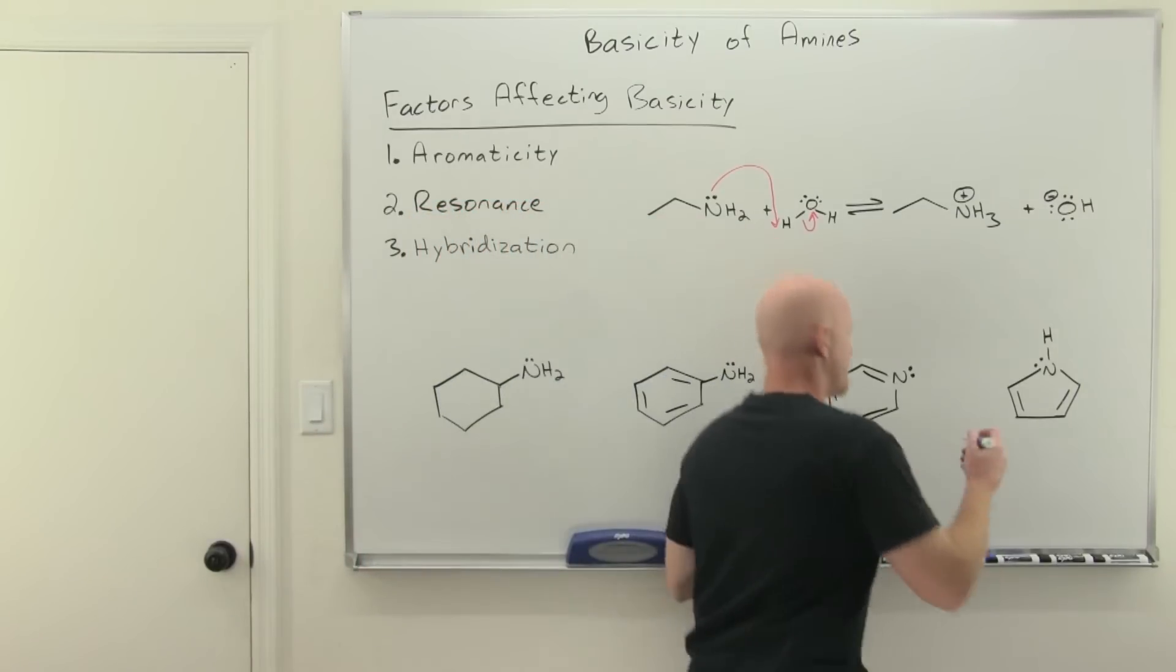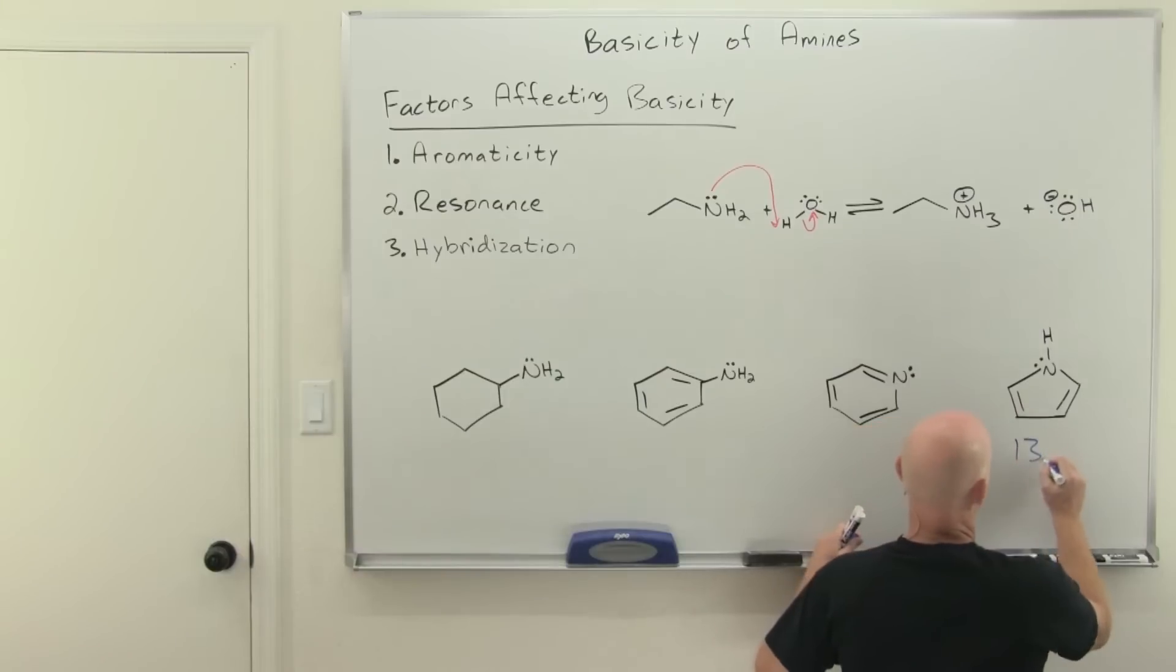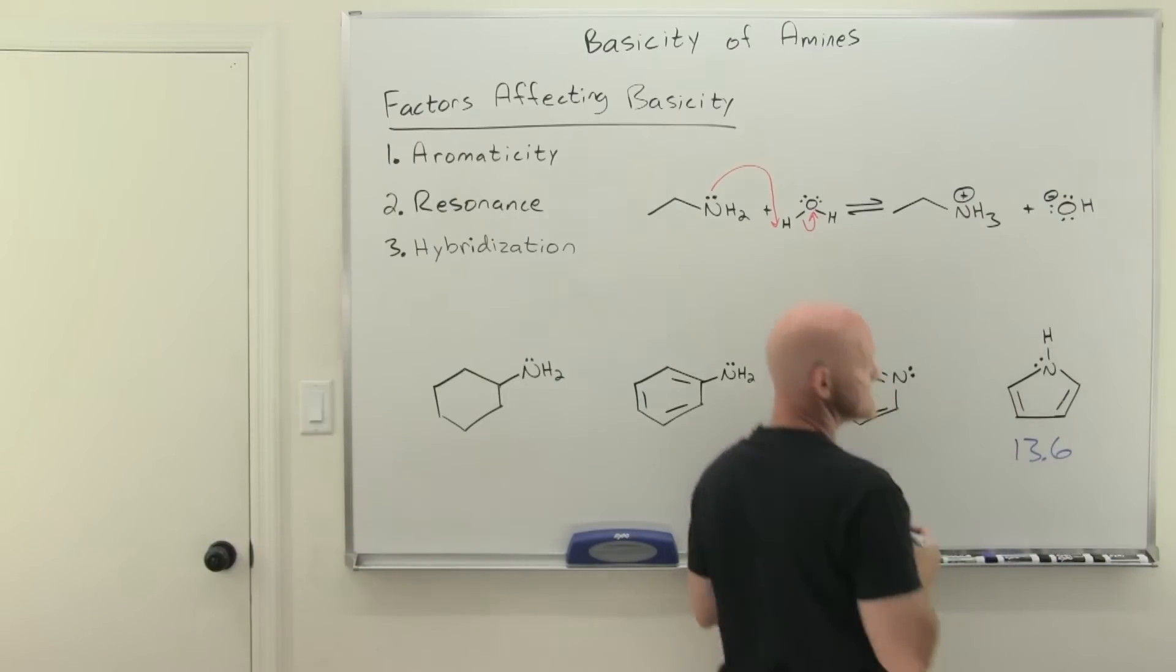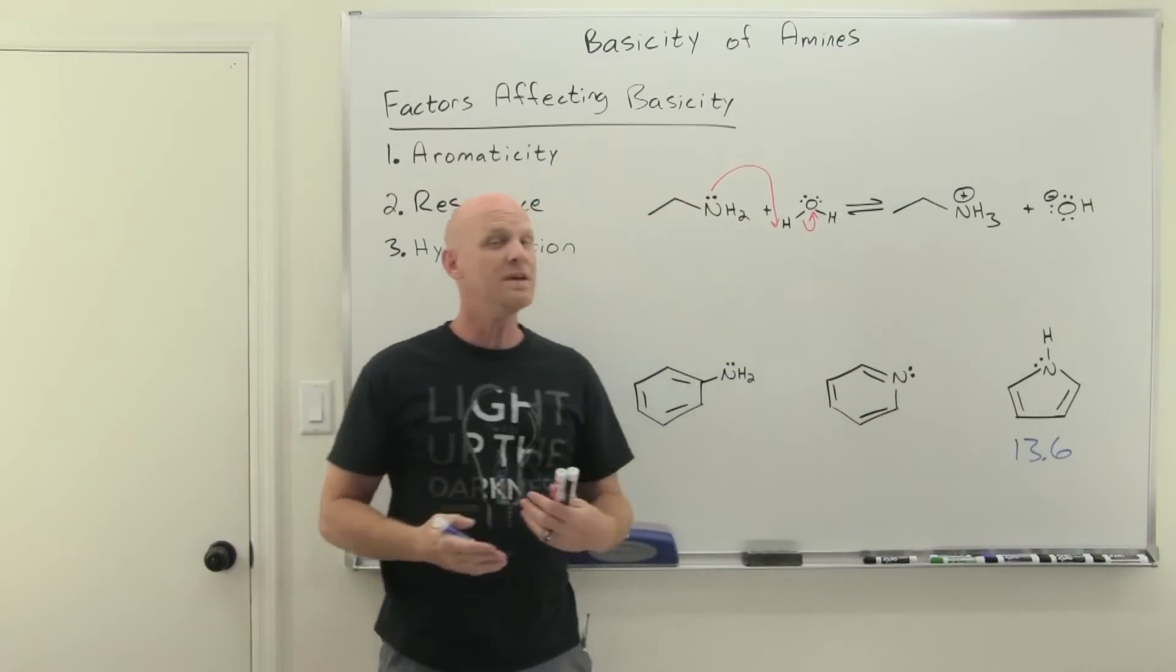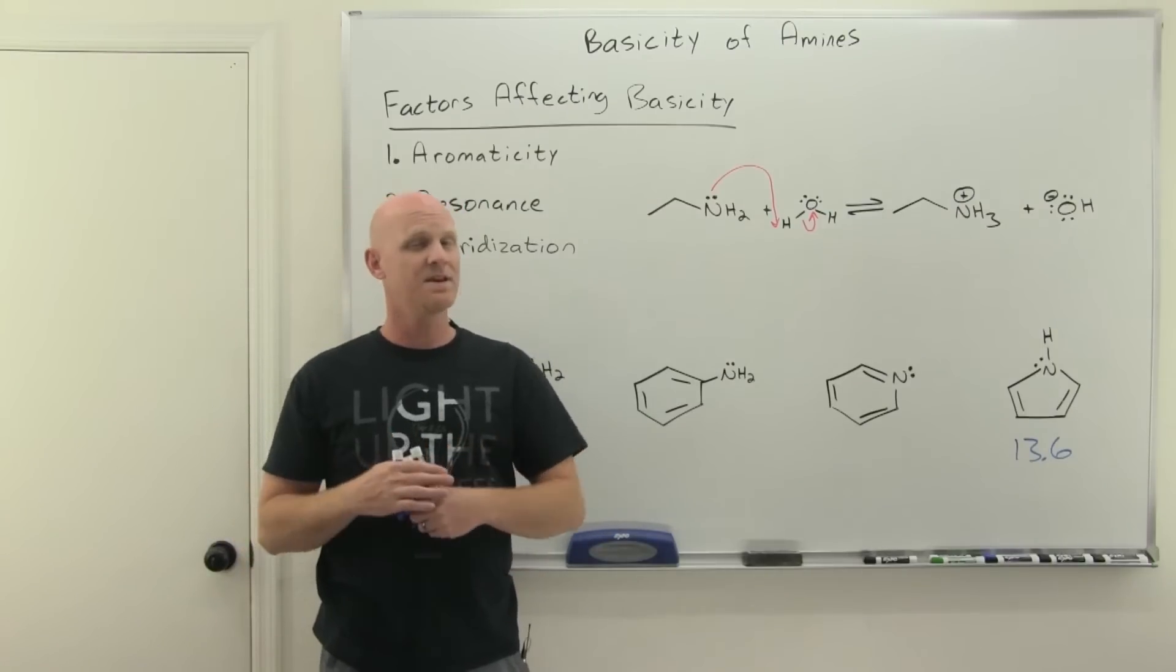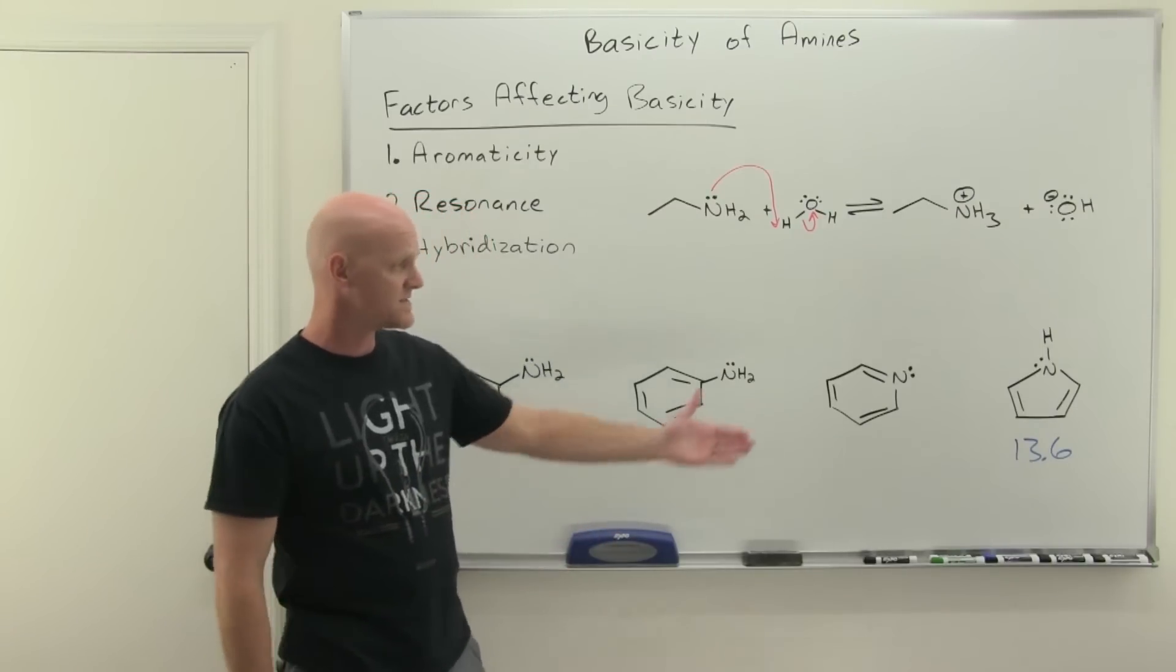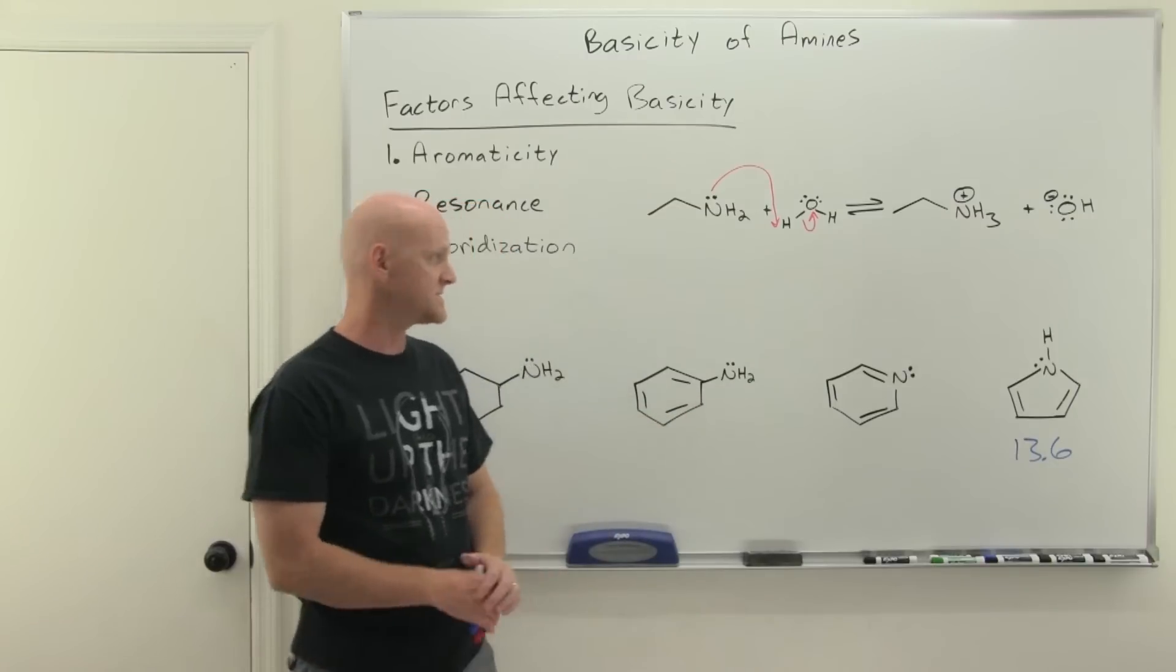If you look on your handout there, our pKa here, or pKb, I should say, is 13.6. And the lower the pKb, the stronger the base, just like the lower the pKa, the stronger the acid. You'll find out this is going to be the highest of the pKb's of any on our list.